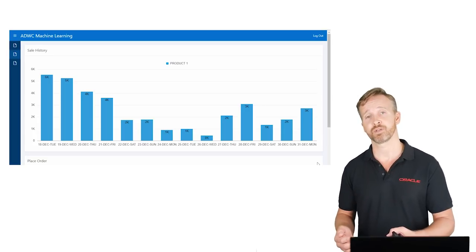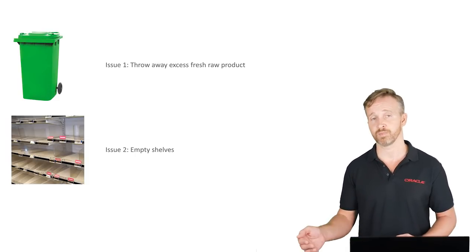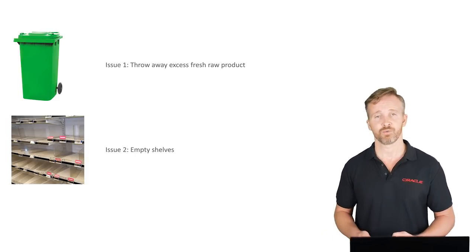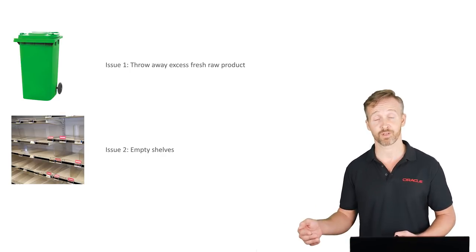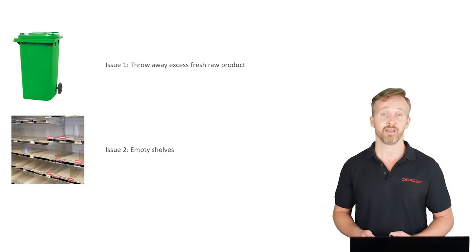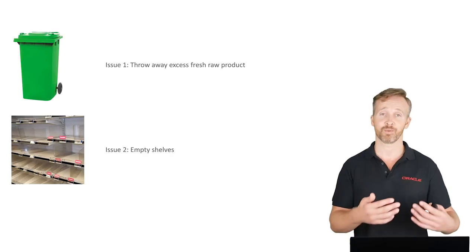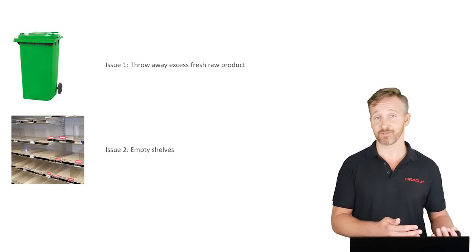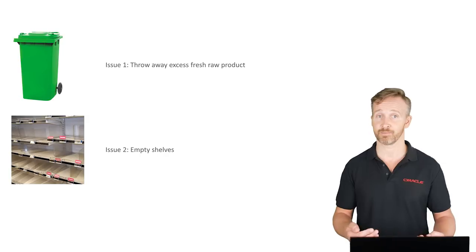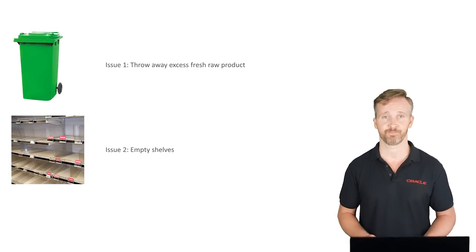It's a human task and it's very easy to make errors, and that's what's happening to this company. The two issues they run into: sometimes they order too much, and have to throw fresh raw ingredients away at the end of the day. And sometimes, to compensate, they order too little and end up with empty shelves, disappointing customers.